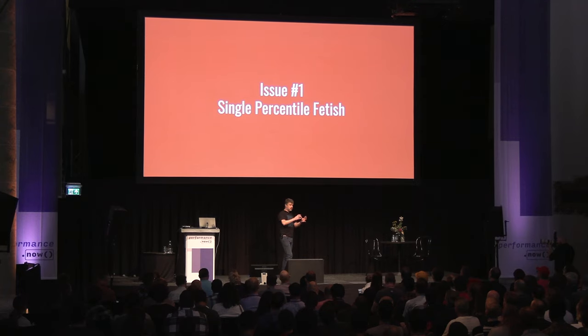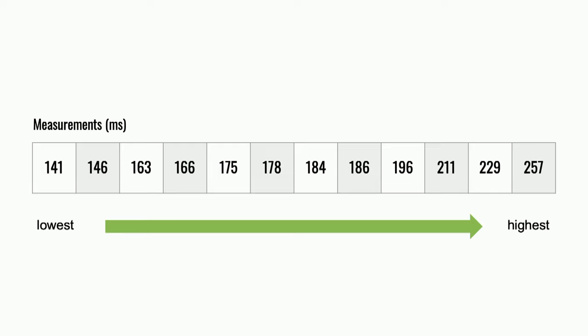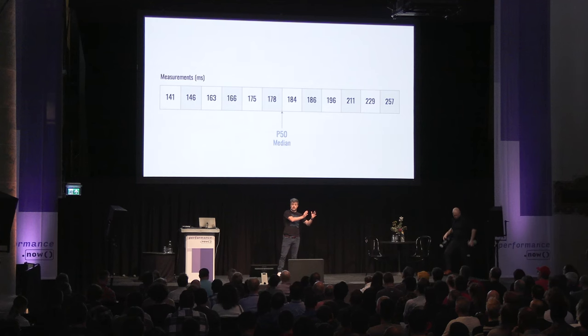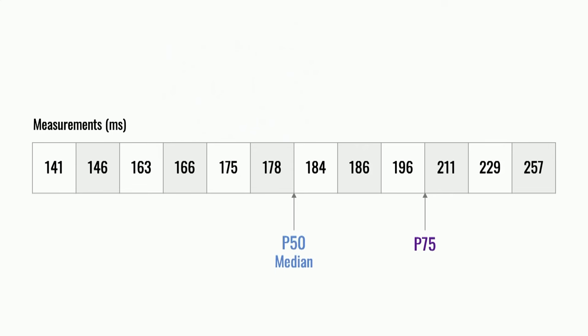My kids have a single color fetish — blue or purple. We have a single percentile fetish: oh, what percentile do you look at? P75? P50? P95? The problem with that — let me first make sure you know what percentiles are. Suppose you have 12 measurements. You order them from very fast to very slow. The middle is the median or P50: 50% is faster, 50% is slower. P75 means 25% is faster, 75% is slower. Same for P25, P95, whatever you're looking at.